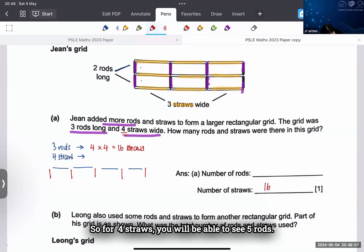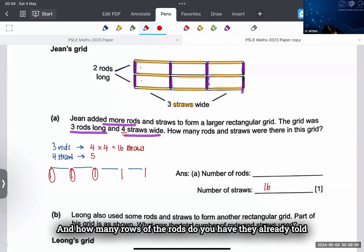And how many rows of the rods do you have? They already told you: you have 3 rods long. So you have 3 rows of the rods.